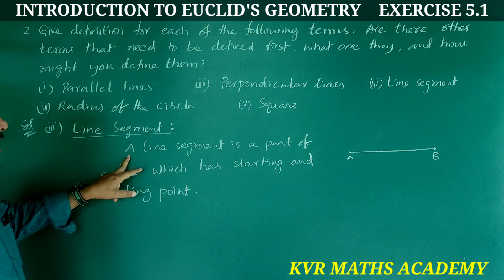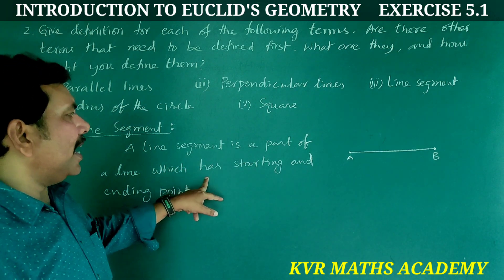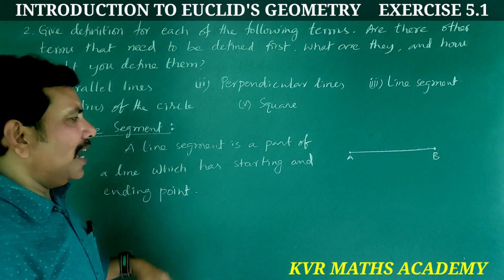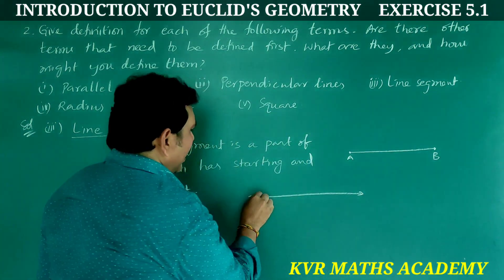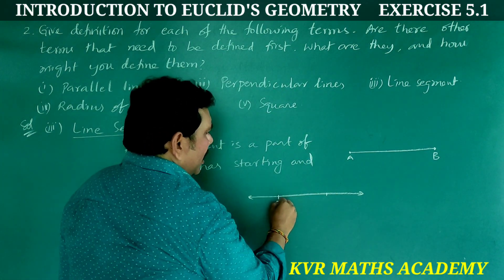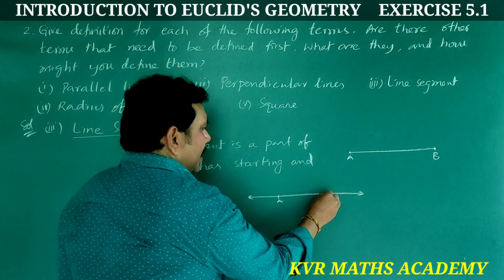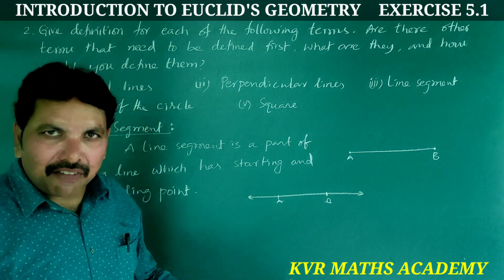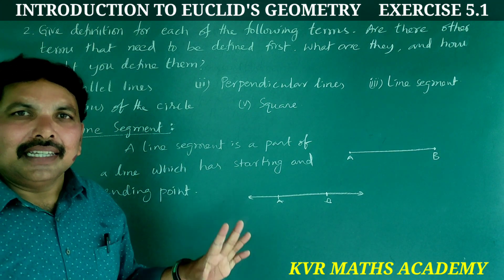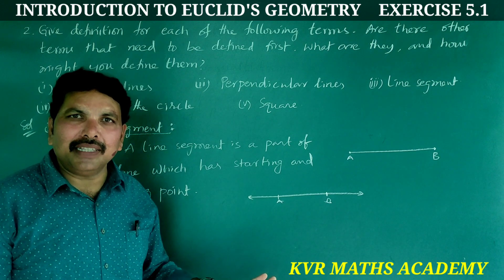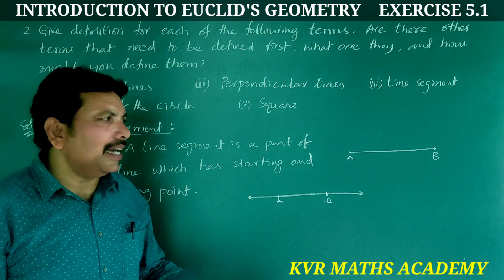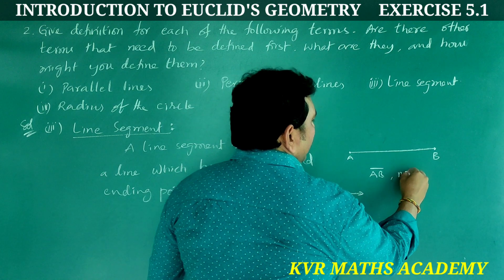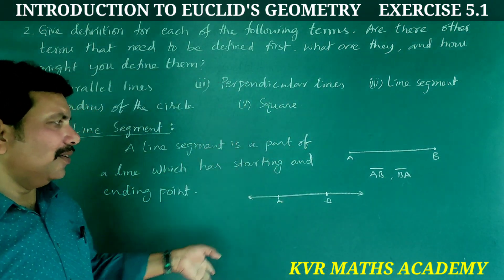Third term: line segment. A line segment is a part of a line which has a starting point and an ending point. For example, if we mark two points A and B on a line, the portion AB has a starting and ending point — that is called a line segment AB, also written as BA. Both are the same.